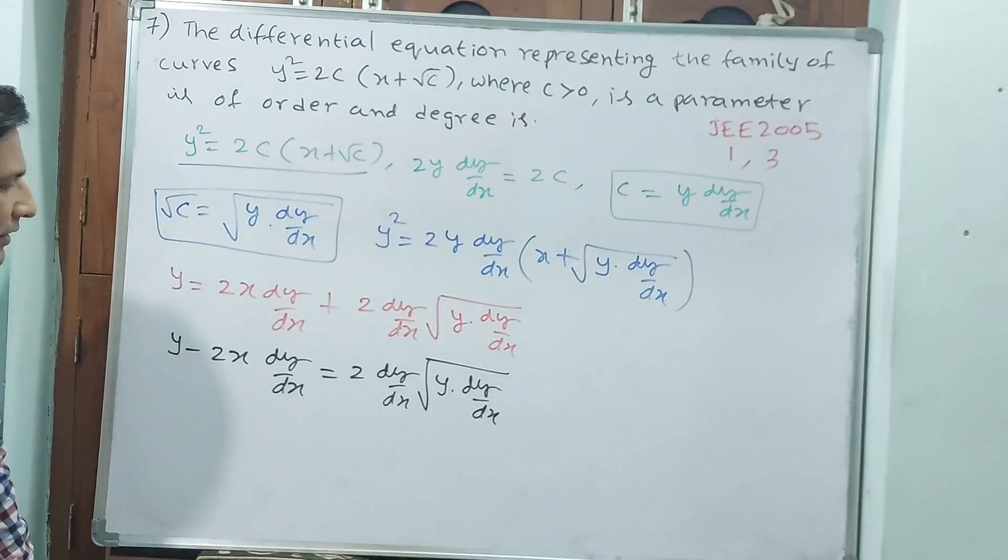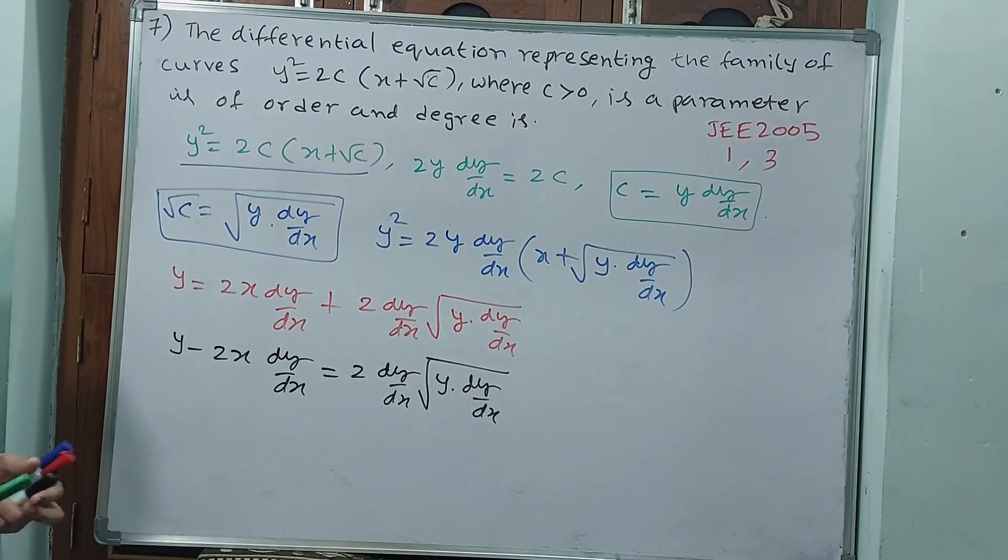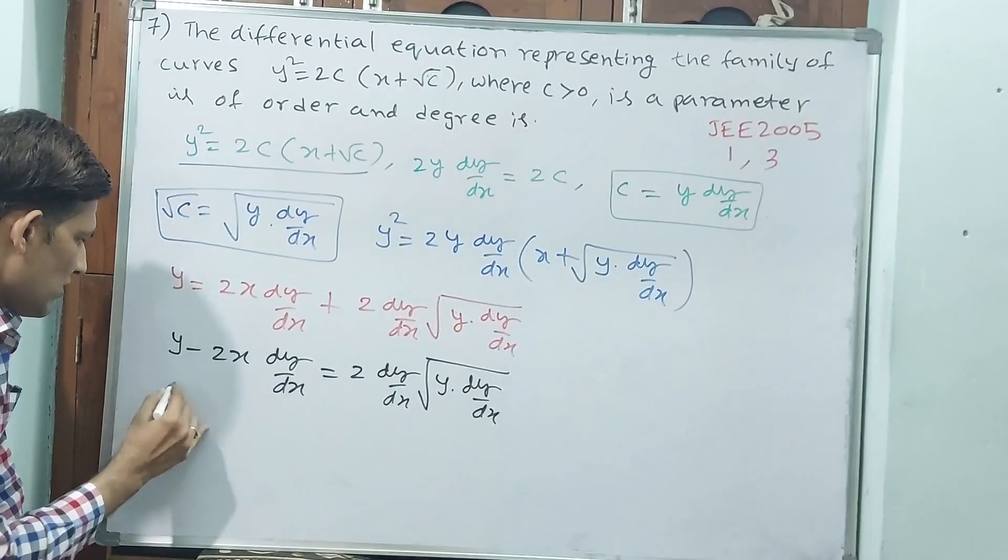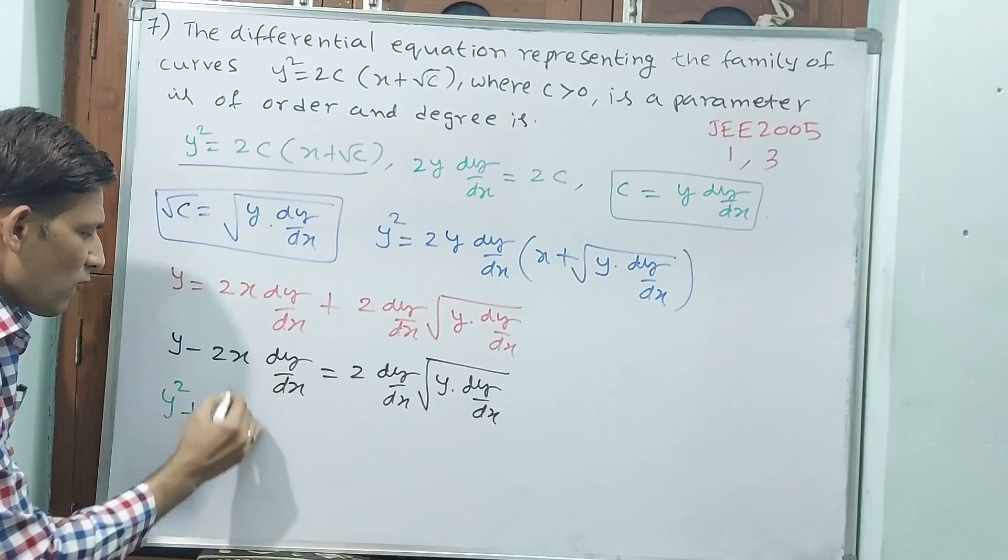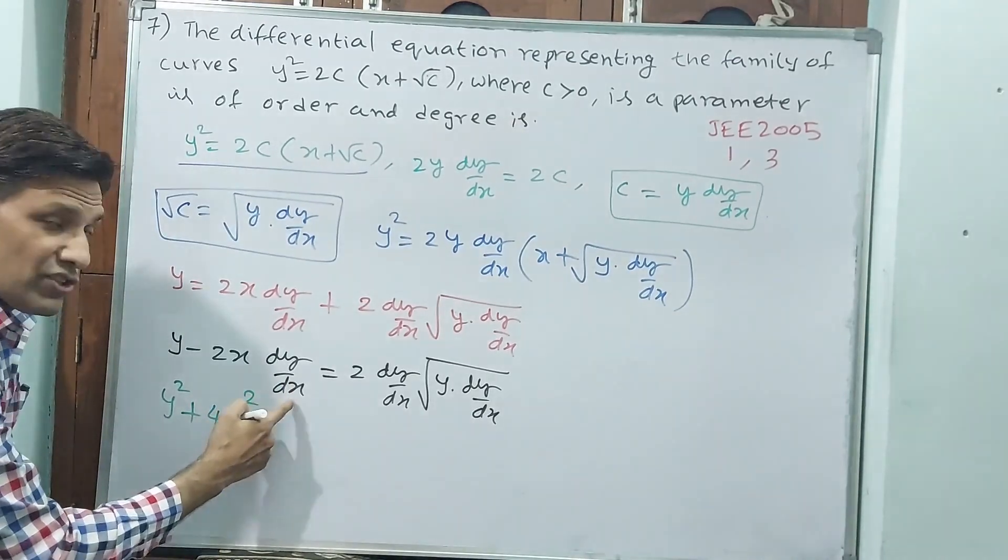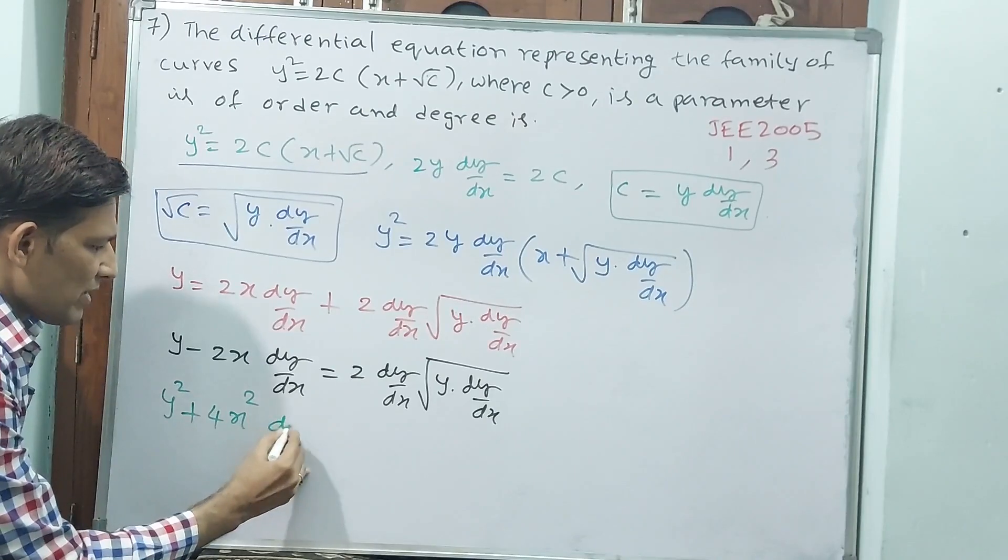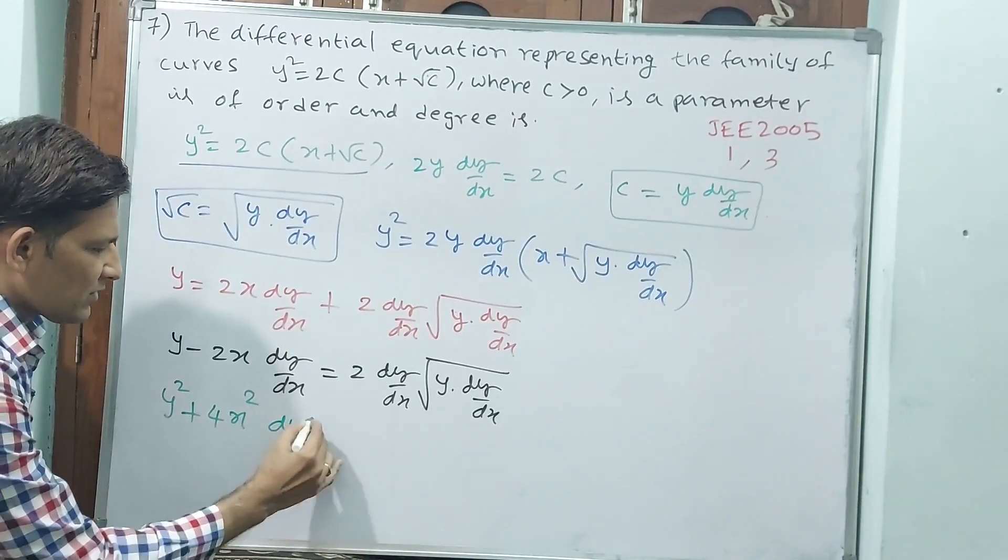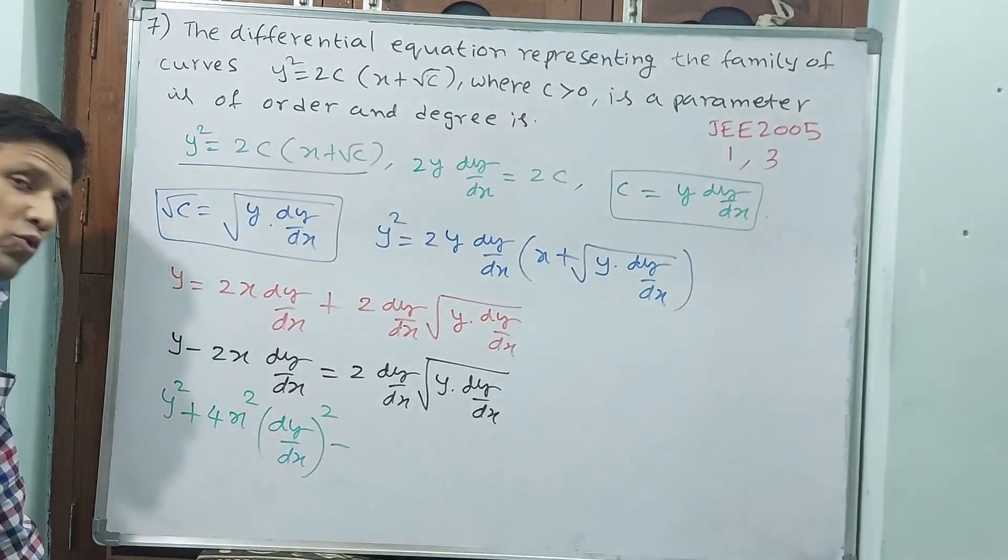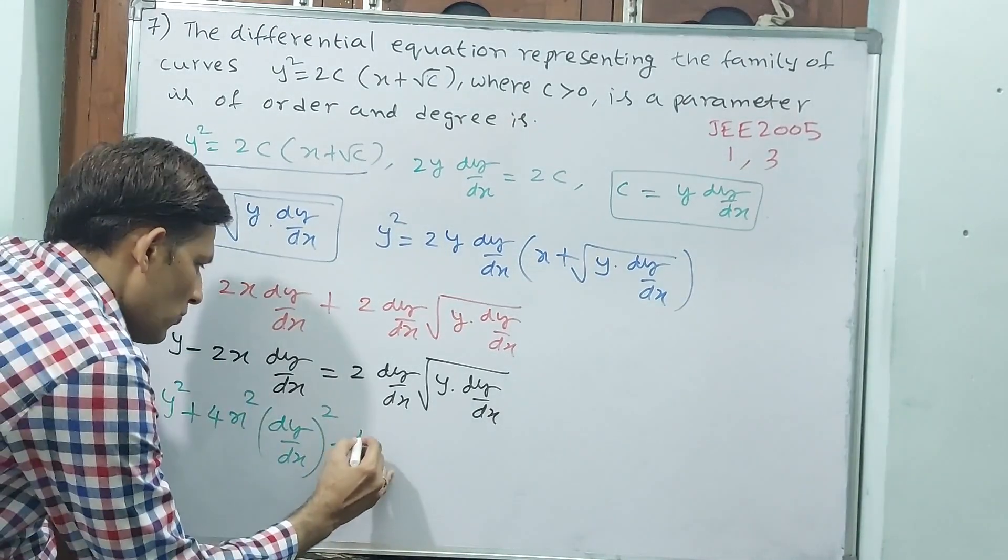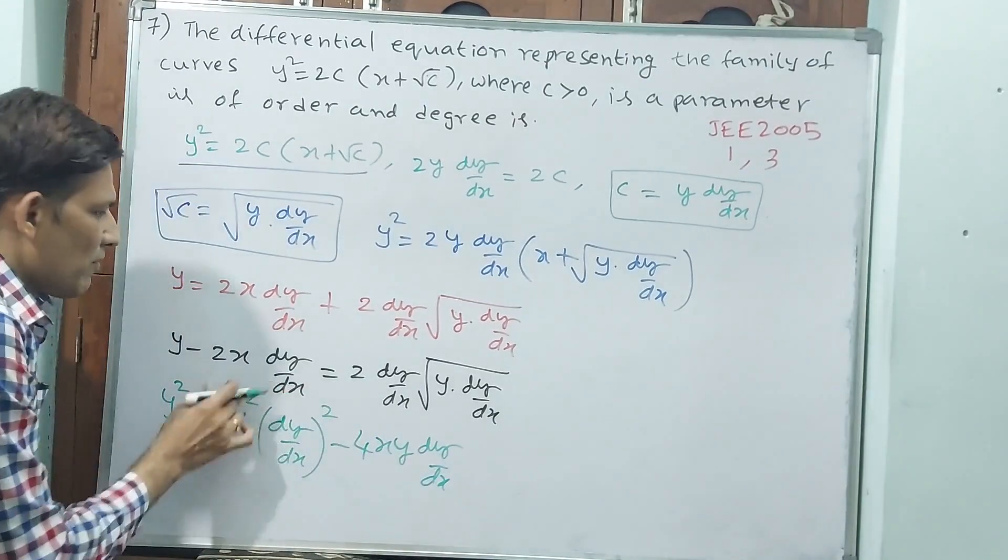Now, squaring on both sides. If I square on both sides, this is not operational square, this is algebra square. That means (y - 2x·dy/dx)² = y² + 4x²(dy/dx)² - 4xy·dy/dx. This side is over.